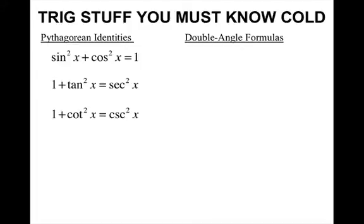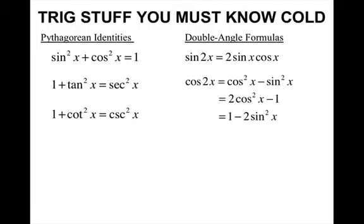The double angle formulas: sine 2x equals 2 times sine x times cosine x. Cosine 2x has three options: cosine squared x minus sine squared x, or 2 times cosine squared x minus 1, or 1 minus 2 sine squared x. Also tangent 2x, which equals 2 tangent x all over 1 minus tangent squared x.